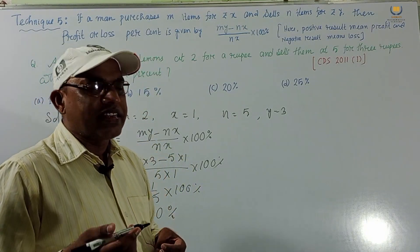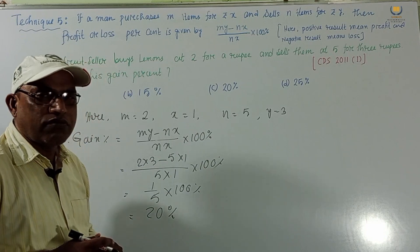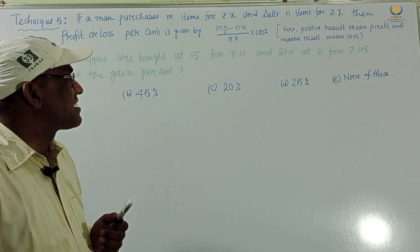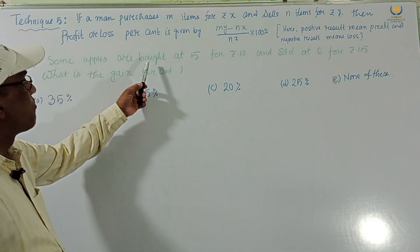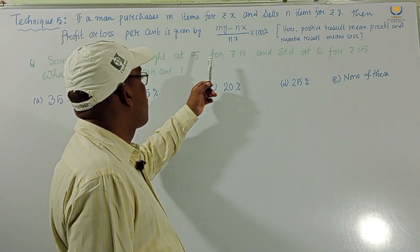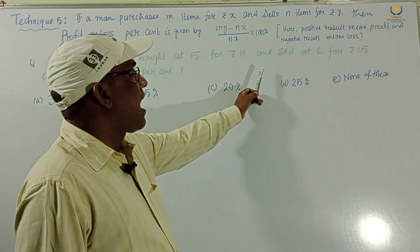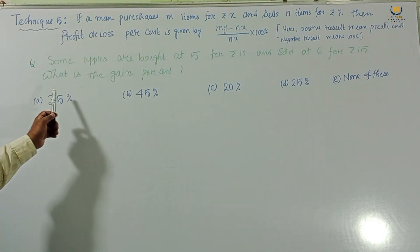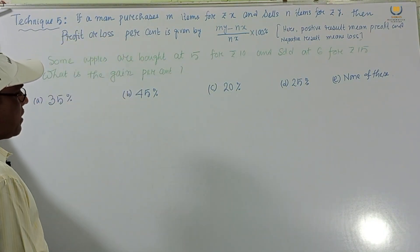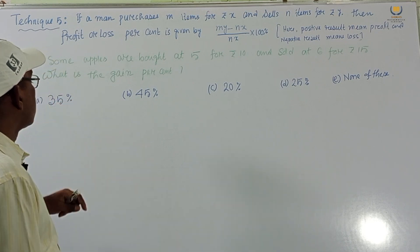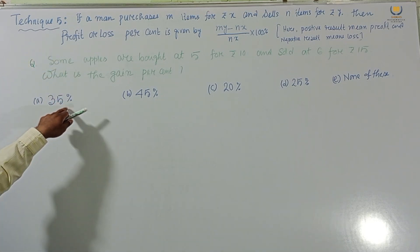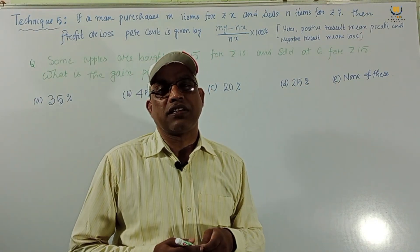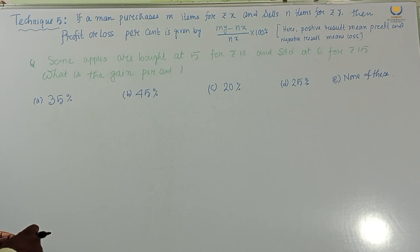That solution took about 10 seconds — very easy! Now consider another interesting problem: Some apples are bought at 5 for rupees 10 and sold at 6 for rupees 15. What is the gain percent? Options given are 35 percent, 45 percent, 20 percent, 25 percent, and none of these.